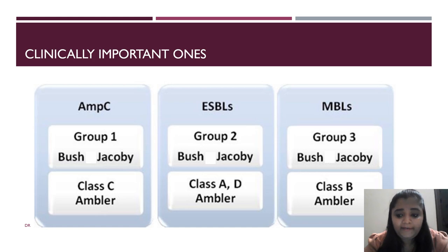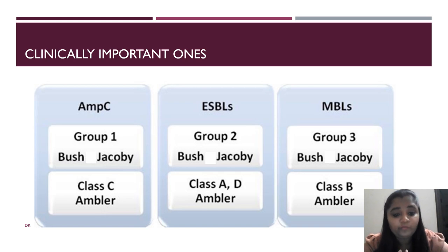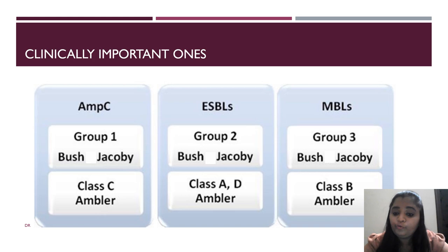The clinically important ones to remember are AmpC, ESBL, and MBLs. AmpC comes under Ambler Class C and Group 1 of Bush-Jacoby. ESBL comes under Ambler Class A and D and Group 2 of Bush-Jacoby. MBLs come under Ambler Class B and Group 3 of Bush-Jacoby.